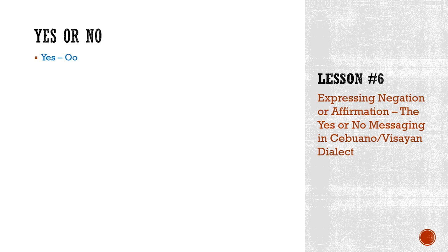First, we have yes: oo. And then for no, we have dili, and sometimes no is also expressed as wala. This may be a little confusing, but after this lesson, you will be able to gain clarity on the difference in the usage of these two words that express a negative thought.